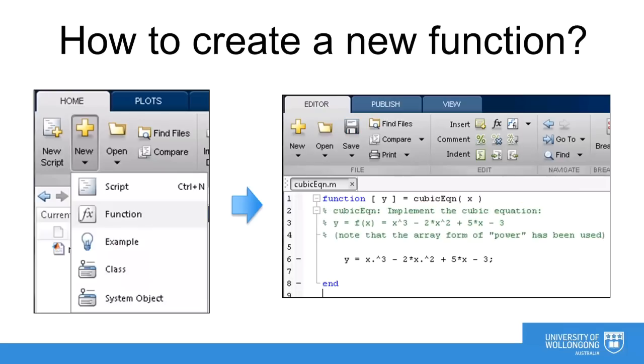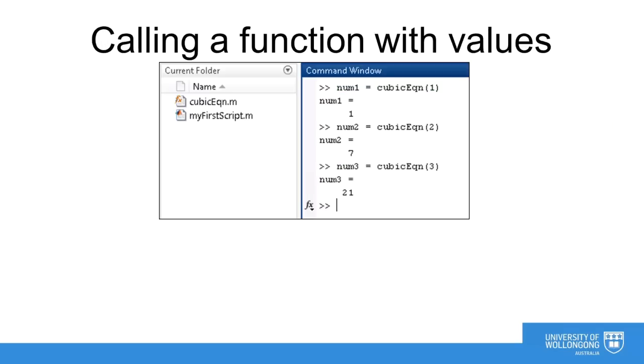Let's now replace the template with the function that we would like to implement, complete with name x as input, y as output and the mathematical description inside the body of the function itself. We then need to save the function mFile with the same name of the function. Now we have a function file saved. And you can see it has a different icon compared with the script file we saved earlier. Function files have a red f and x in the icon.